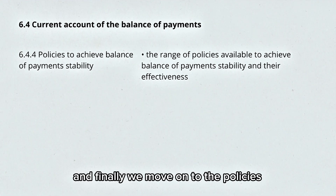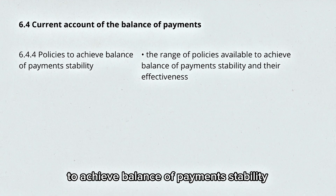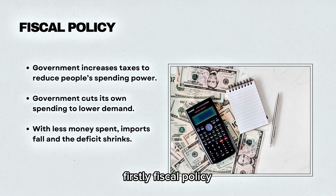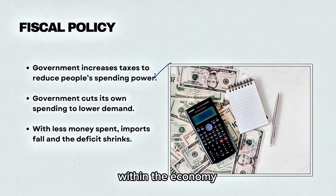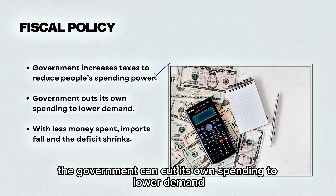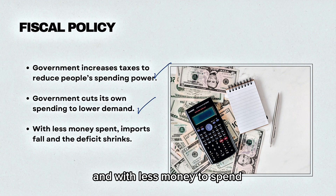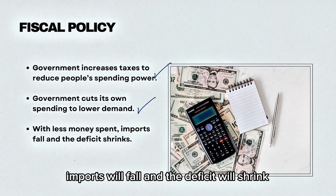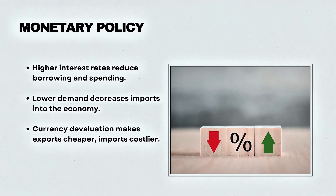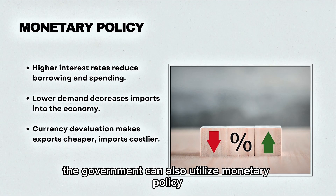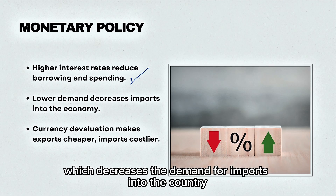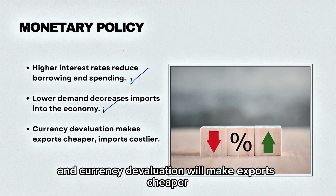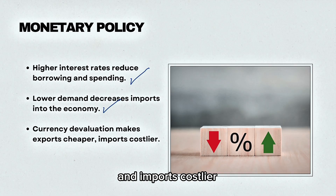Finally, we move on to the policies to achieve balance of payments stability. Firstly, fiscal policy: the government can increase taxes to reduce people's spending power, or cut its own spending to lower demand. With less money to spend, imports will fall and the deficit will shrink. The government can also utilise monetary policy by using higher interest rates to reduce borrowing and spending, which decreases demand for imports. Currency devaluation will also make exports cheaper and imports costlier.